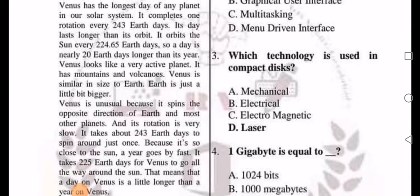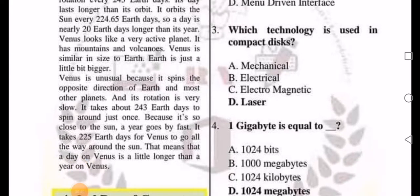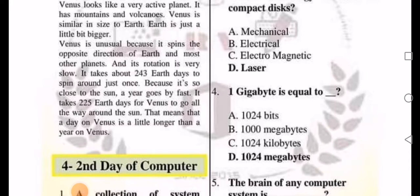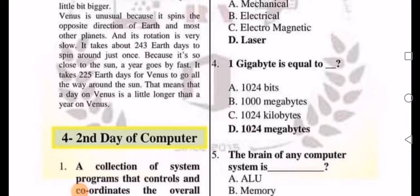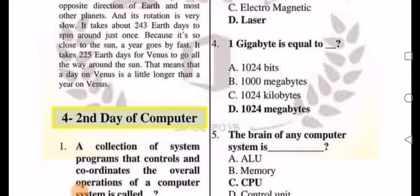Which technology is used in compact disc? A, mechanical. B, electrical. C, electromagnetic. D, laser. So the answer is D, laser. One gigabyte is equal to 1024 bits,